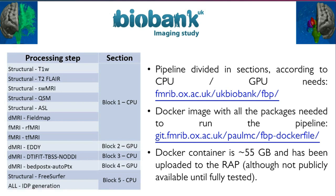The pipeline code is freely distributed — you can access it at the provided link. We also created a Docker image with all the packages needed to run the pipeline, and the Dockerfile recipe is available as well. The Docker image is 55 gigabytes and has already been uploaded to the RAP, although right now it's not publicly available until we fully test it.